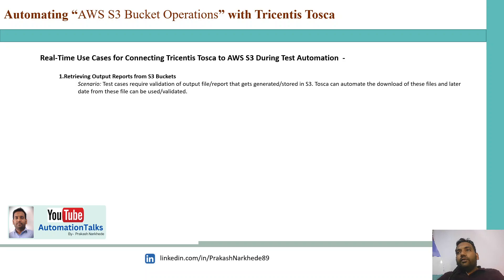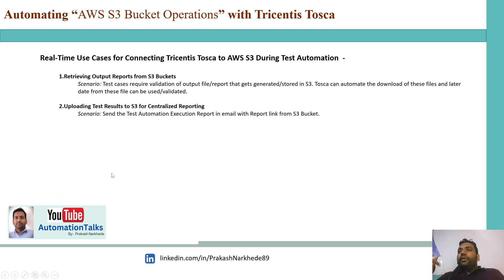I cannot directly read the file from S3 bucket with Tosca, so this Special Execution Task is going to help us download the file from S3 bucket to local, and then later you can put whatever validations you want. Use case number two: you want to upload test results to S3 bucket.